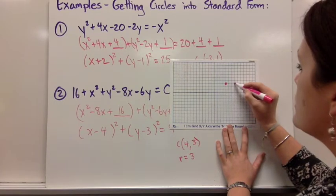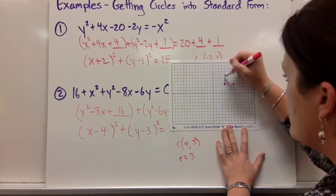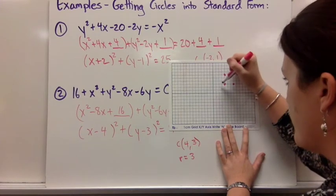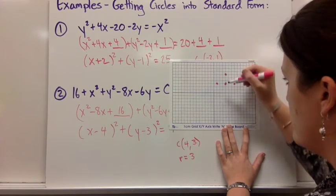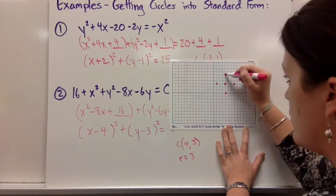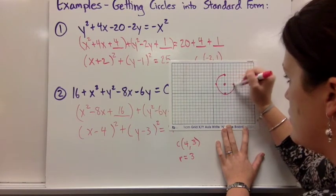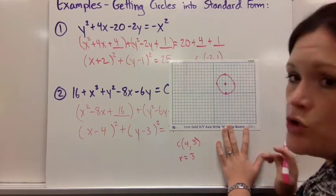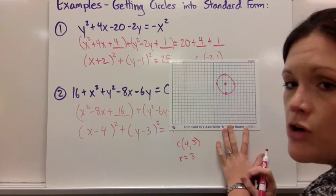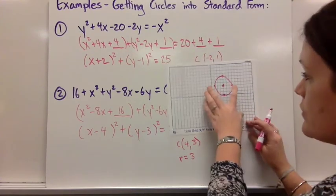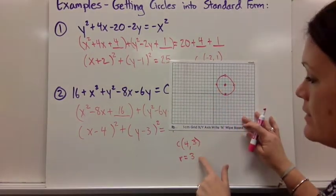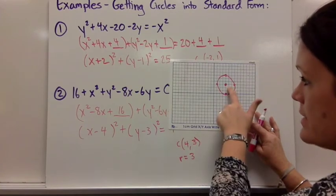So I need to go 1, 2, 3 to the right, 1, 2, 3 up, 1, 2, 3 to the left, and 1, 2, 3 down. And then don't draw a square, sketch a circle. But that's all you would have to do to draw a circle and if they give you a circle you could pick out the radius and the center point by examining what's happening.